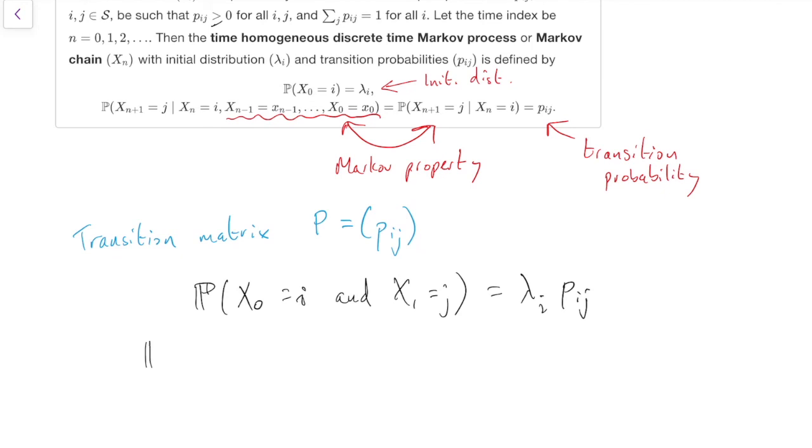Similarly, a slightly trickier one. Probability that xn plus 2 equals j and xn plus 1 equals k, given xn equals i. So that's given that xn equals i. So we can assume we're already there.